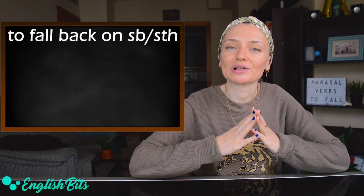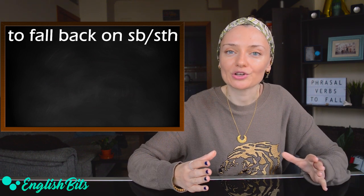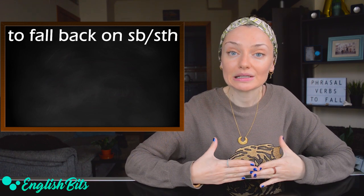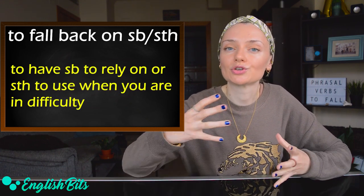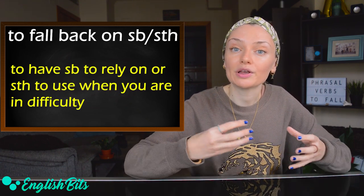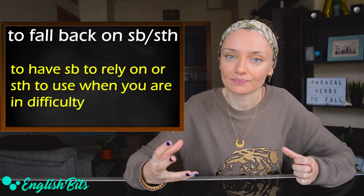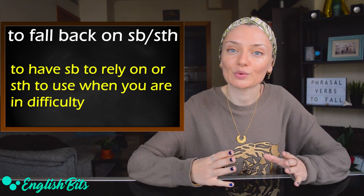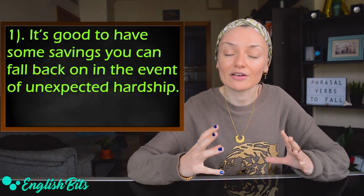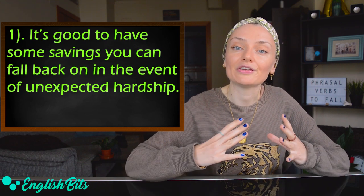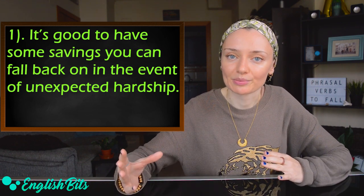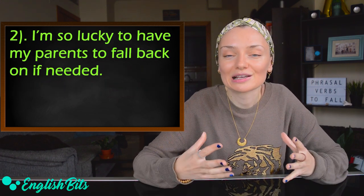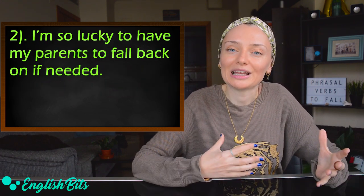An example sentence: a lot of people feel as if their life is falling apart after a breakup or a divorce. Now let's move on to our second phrasal verb, which is to fall back on someone or something. It means to have someone to rely on or something to use when you are in difficulty. For example, it's good to have some savings you can fall back on in the event of an unexpected hardship. I'm so lucky to have my parents to fall back on if needed.